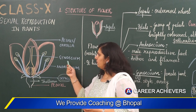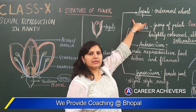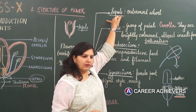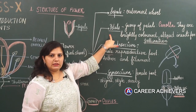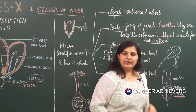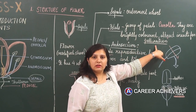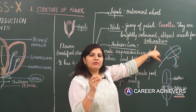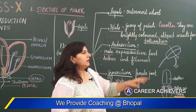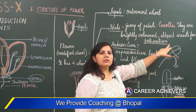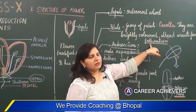The third whorl is the androecium and the fourth is the gynoecium. Every flower needs to reproduce, and flowers reproduce sexually. For that, they require insects to carry their pollen grains. The process of transfer of pollen grains is called pollination, which we will study in the next video.